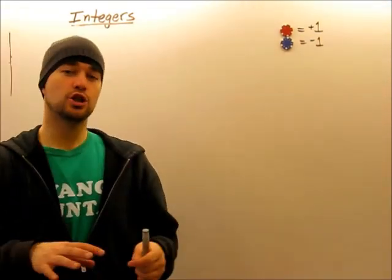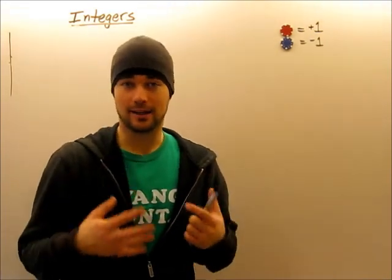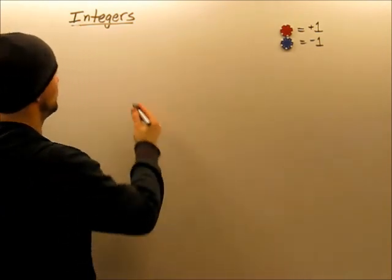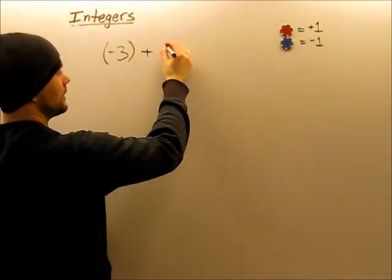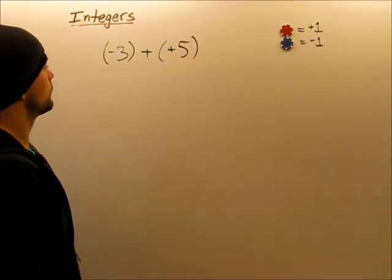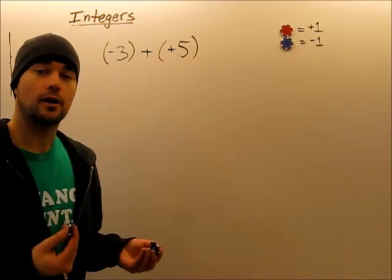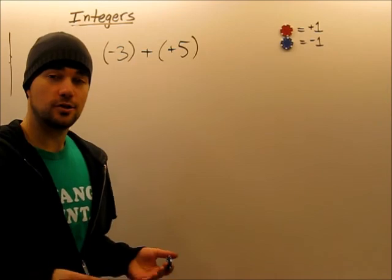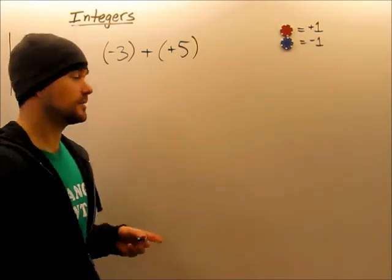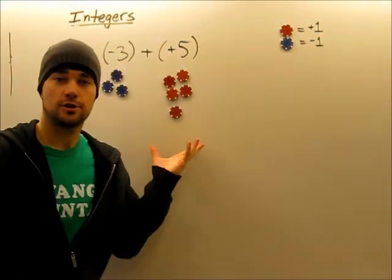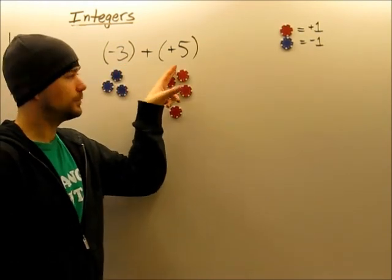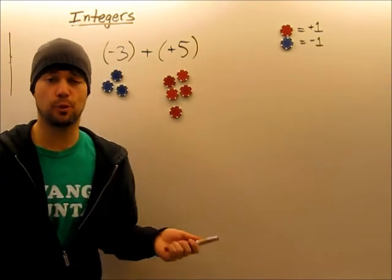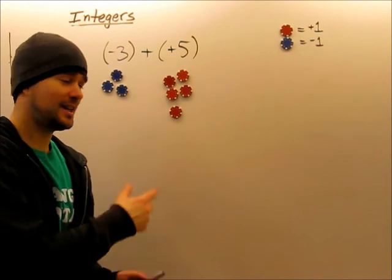Now I'm going to go through an example that will show us how we can use counters while adding integers together. So let's just look at this here. If I had something, a basic statement, let's say negative three plus positive five. All I need to do is represent these with our, what do you call these things? Counters. It's just this easy.